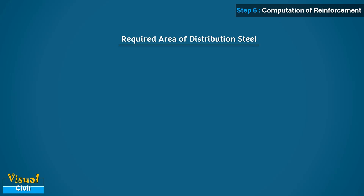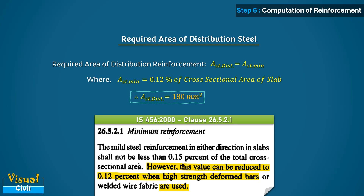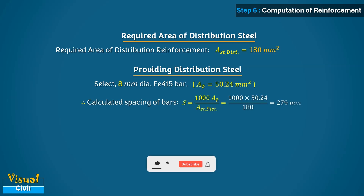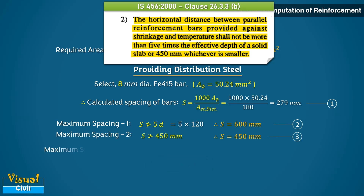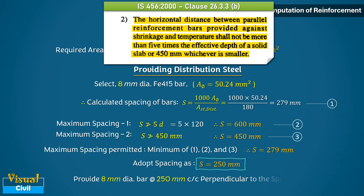As per IS code, the distribution steel should equal the minimum required steel, which is 180 mm². Adopt 8 mm dia bars for distribution steel. The required spacing is 279 mm. As per IS code, spacing of bars should not exceed five times the effective depth or 450 mm, whichever is smaller. Hence, adopt a spacing of 250 mm. Provide 8 mm dia bars at 250 mm c/c perpendicular to the span as distribution steel.